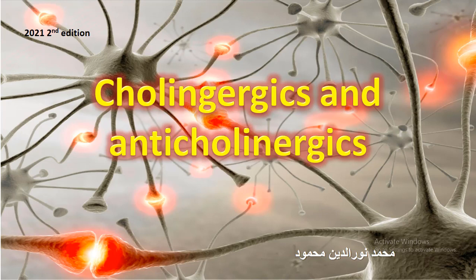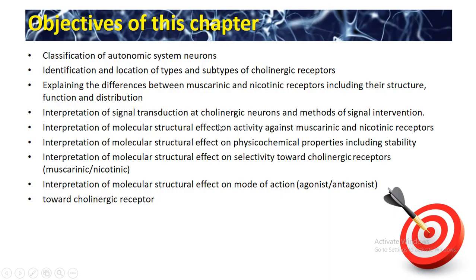In this section of the course we are going to deal with several objectives regarding drugs acting on cholinergics and anticholinergics. The initial part will include the classification of the autonomic nervous system into parasympathetic and sympathetic divisions, and the effect of both on the affected organs. We will also identify and locate types and subtypes of cholinergic receptors involved in the parasympathetic system, and explain the differences between muscarinic and nicotinic receptors, which have different structural, functional, and distribution properties within the body.